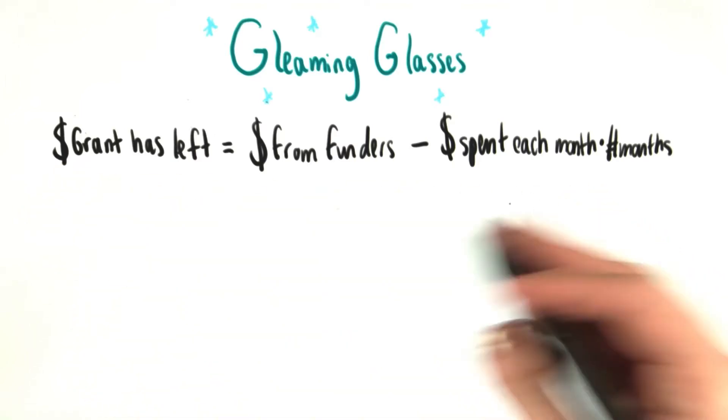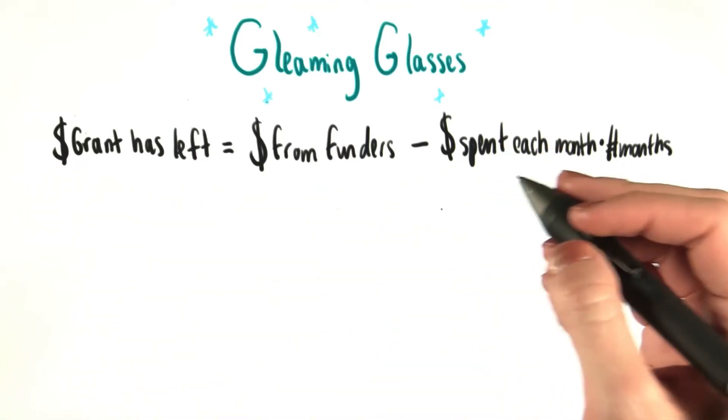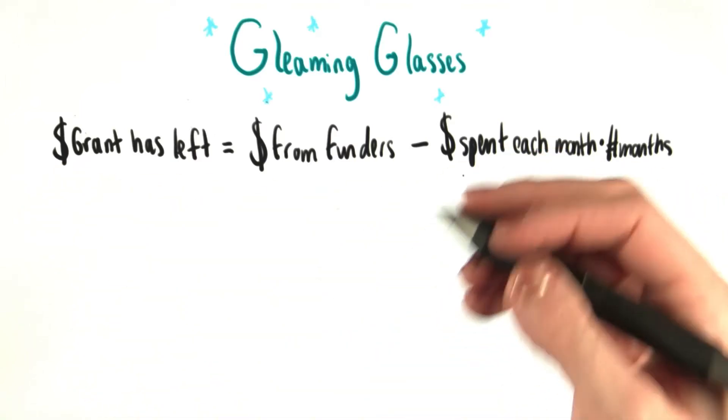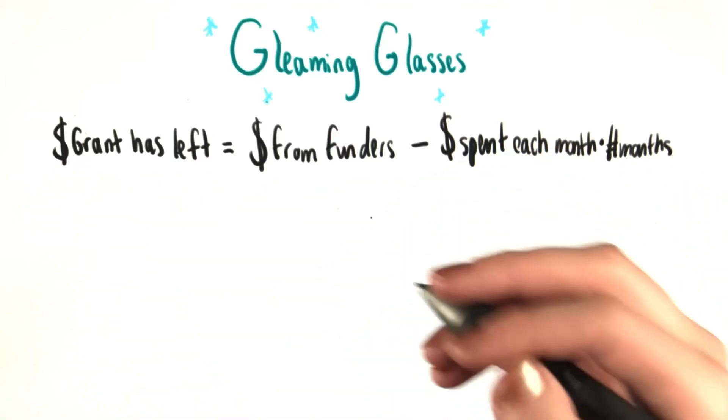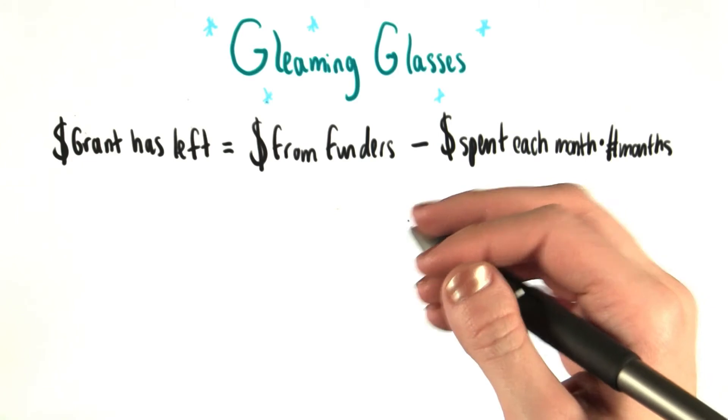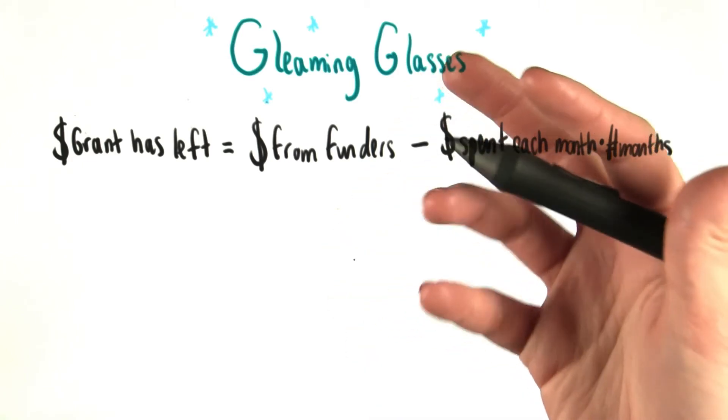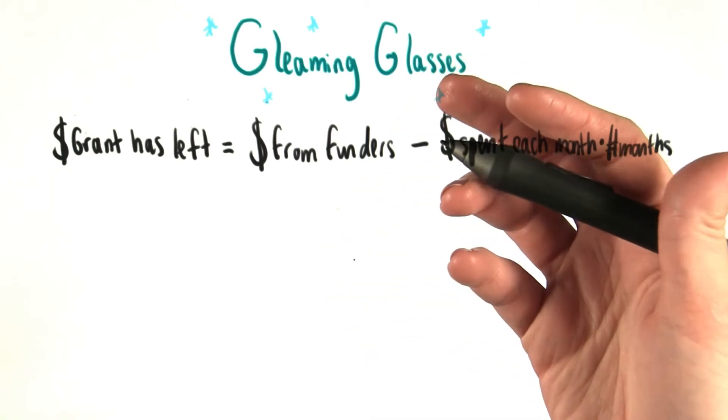So now we have this awesome, more detailed equation, but I still don't see any numbers. What do we know about numbers in this situation?